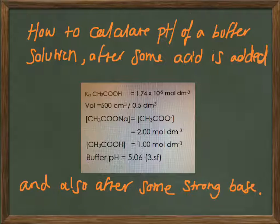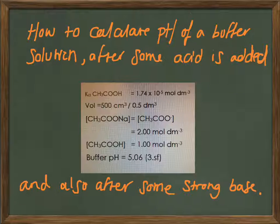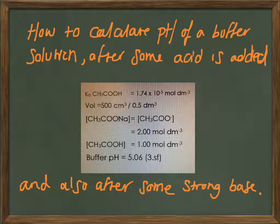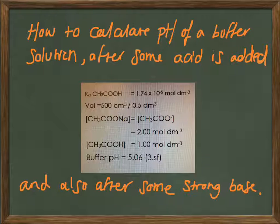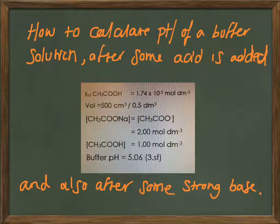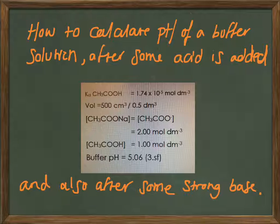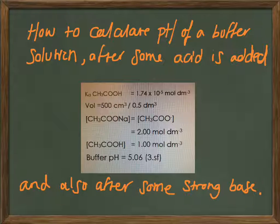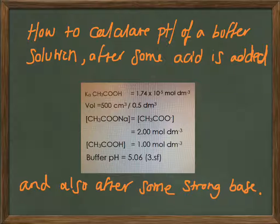We know that buffers are defined as solutions that can resist and maintain a fairly constant pH despite addition of small amounts of strong acid or strong base. Let's see if we can mathematically prove this for our buffer solution from the previous video, which was ethanoic acid at 1 molar concentration and ethanoate ions from sodium ethanoate at 2 moles per decimetre cubed. We worked out that it would have a pH around 5.06.